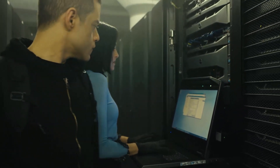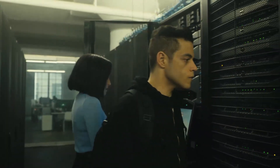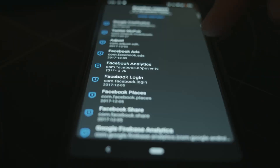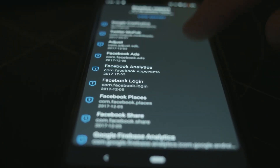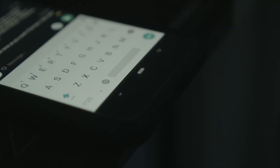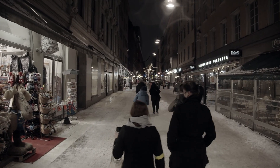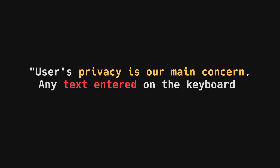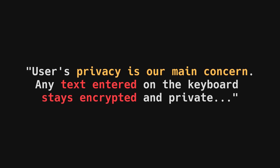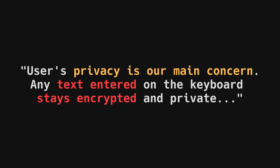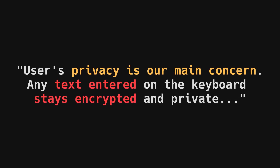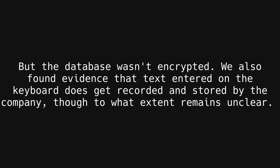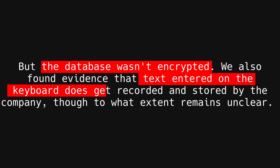All of this information is now available online for anyone to abuse and exploit, which can cause significant harm just because of a poor security practice at a company you trusted your data with. This sort of data collection is unfortunately very common in mobile apps, but this is a virtual keyboard — and that's where things get dark. If you read AI Type's privacy policy at the time, you'd be reassured by phrases like 'user privacy is our main concern' and 'any text entered on our keyboard stays encrypted and private.' But the database was not encrypted, and it was not private. Investigation by ZDNet found evidence that at least some text typed on the AI Type keyboard was recorded and stored by the company.